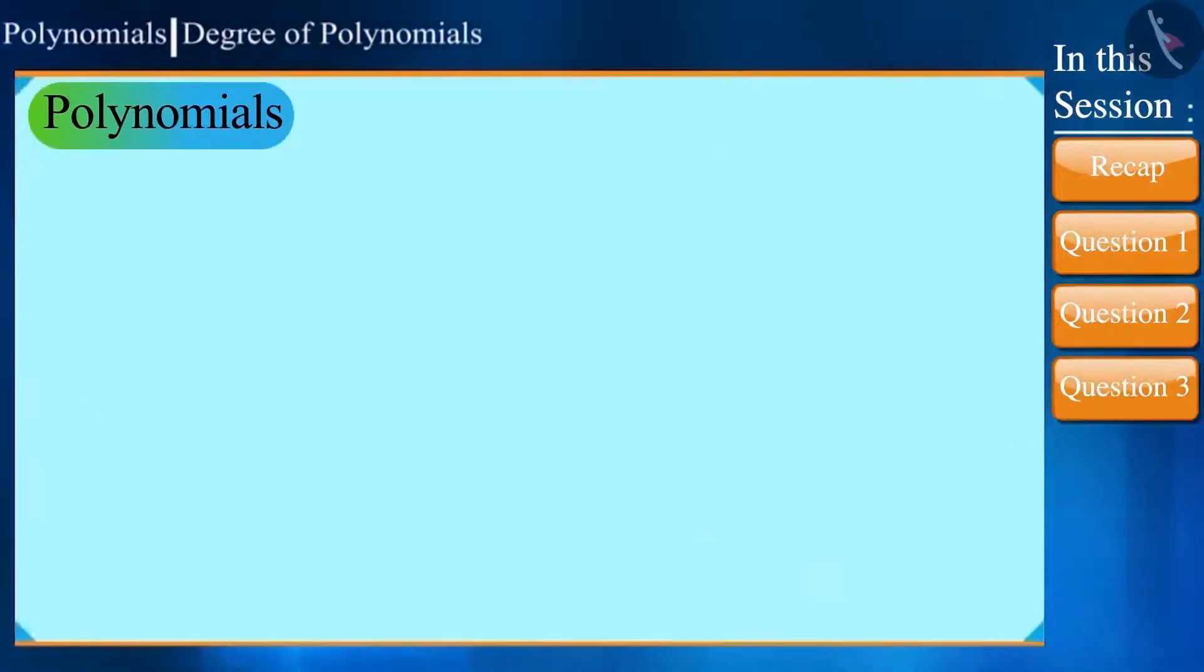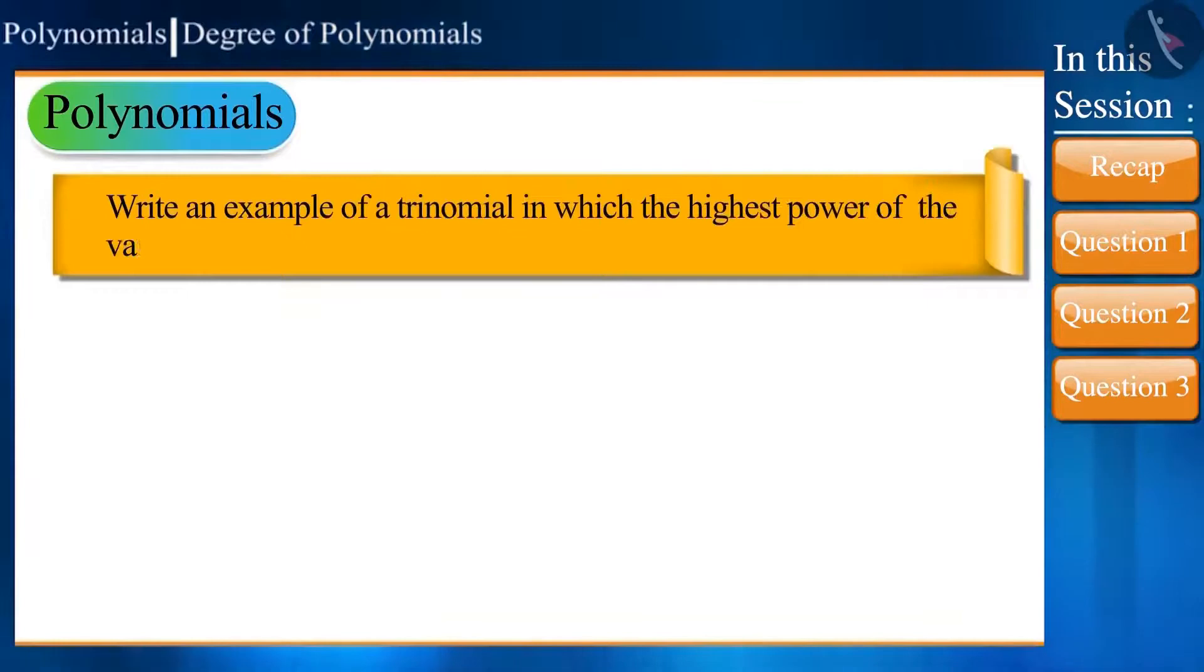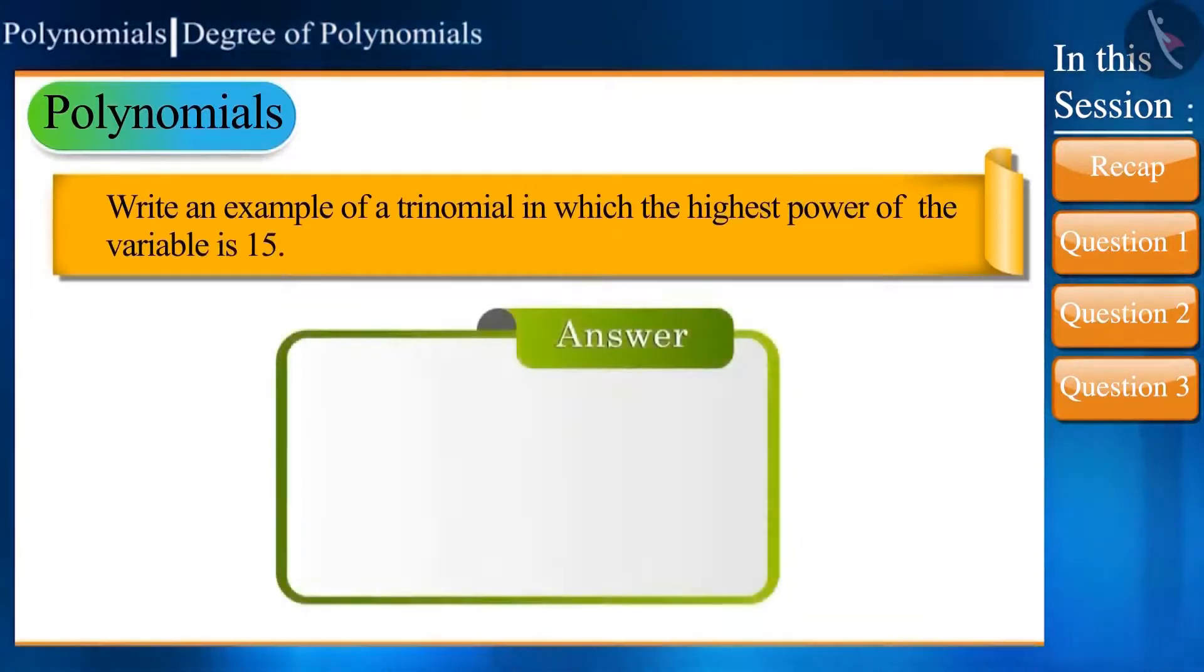Let's see our next question. Here, we will have to write an example of a trinomial in which the highest power of the variable is 15. The answer to this could be as follows.